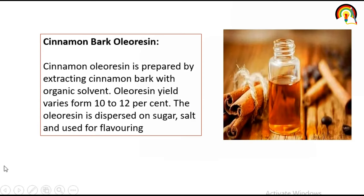Cinnamon bark oleoresin is prepared by extracting cinnamon bark with an organic solvent. Oleoresin yield varies from 10 to 12 percent, and the oleoresin is dispersed on sugar or salt and used for flavoring purposes.